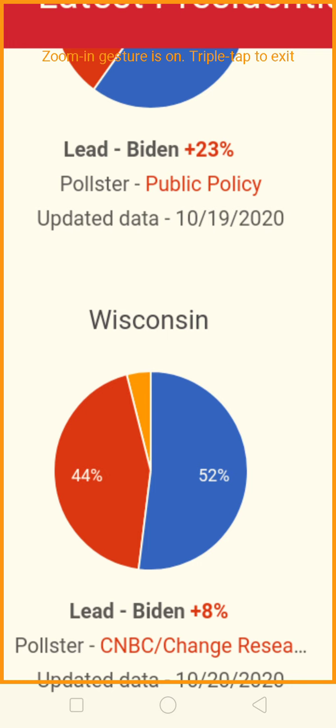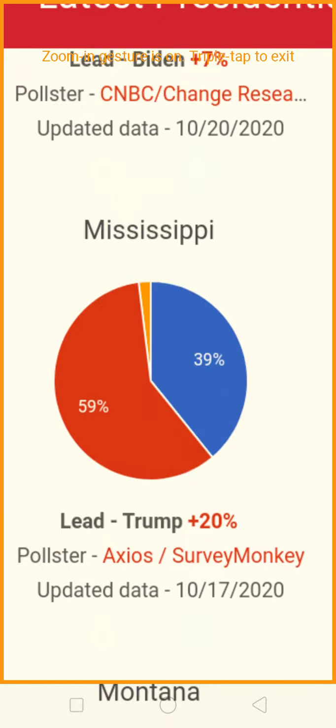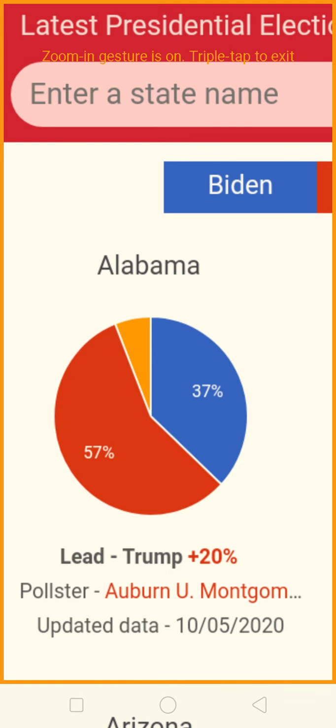Wisconsin — a swing state. 52% to 44%. That's a good lead for Joe Biden. All right, let's go to the right — no pun intended, the right and the left.